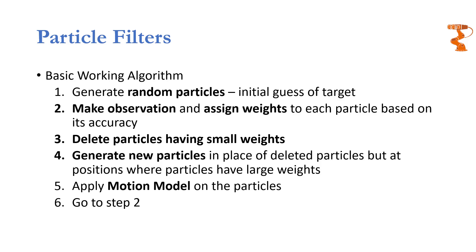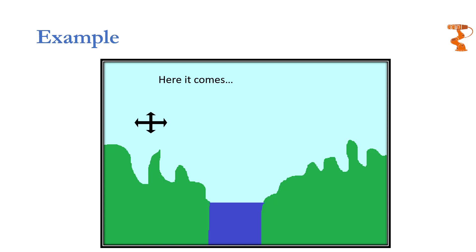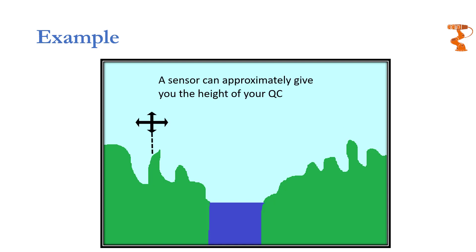Now, let me take you through a simple example step by step to track a quadcopter moving in one dimension only. The issue at hand is to track our quadcopter flying over this landscape. To keep things simple, this quadcopter can move in horizontal direction only. Additionally, our quadcopter is equipped with a rain sensor that can give us the height of the quadcopter above ground.